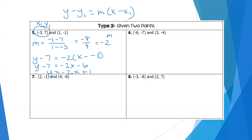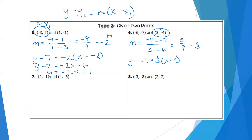For number 6, they give two points, so calculate the slope: subtract y-values over x-values. Negative 4 plus 7 is 3, and 3 plus 6 is 9. So 3 over 9 reduces to one-third. Pick one of the two points — I'll pick the second. Write: y minus negative 4 equals one-third times x minus 3. Minus a negative becomes plus. Distribute one-third, subtract 4 from both sides. Either point you choose will give you the same equation at the end.